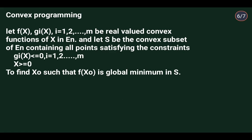Let f of x and g_i of x, i equal to 1 to m, be real valued convex functions of x in E_n, and let S be the convex subset of E_n containing all points satisfying the constraints g_i of x is less than or equal to 0, i equal to 1 to m, and x greater than or equal to 0. To find x-naught such that f of x-naught is a global minimum in S.